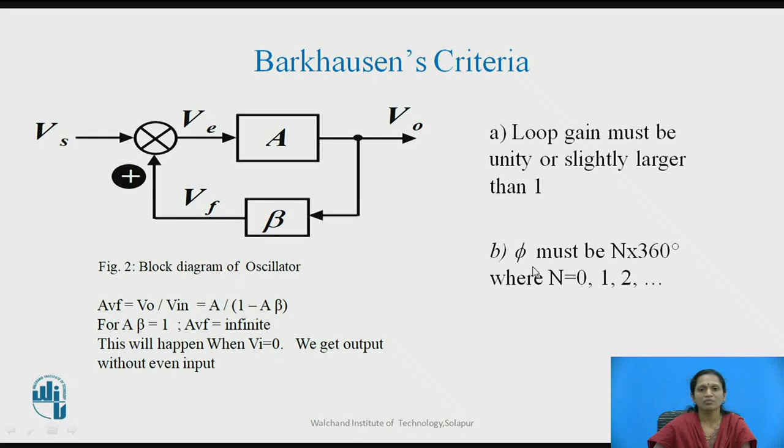The second condition is that the phase shift of the signal or phase shift of the loop must be 0 degrees or 360 degrees, or it can be a multiple of 360 degrees. This is the condition for positive feedback. This positive feedback gives you error voltage, which is amplified, and then sustained oscillations will develop. This is Barkhausen's criteria for oscillations.